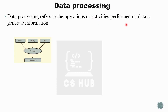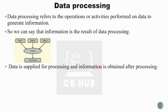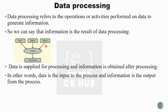Operations or activities performed on data to generate information — we can say that information is the result of data processing. Data is applied through processing and information is obtained after processing. Data is the input to the process; information is the output from the process.